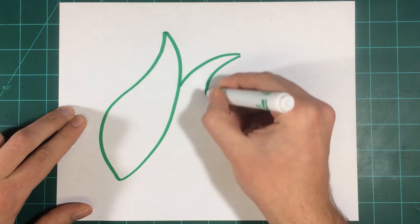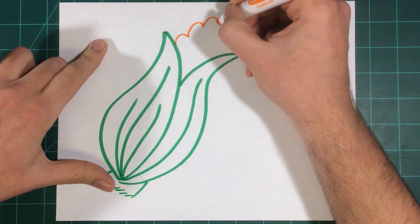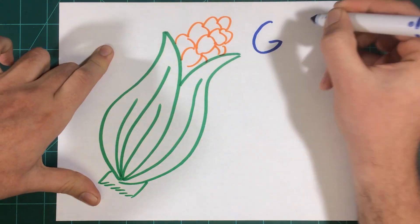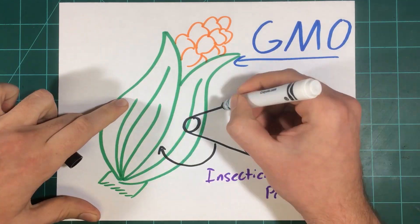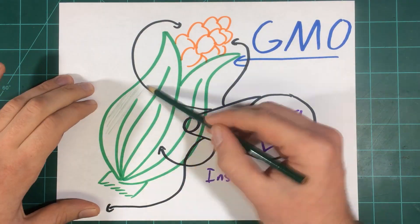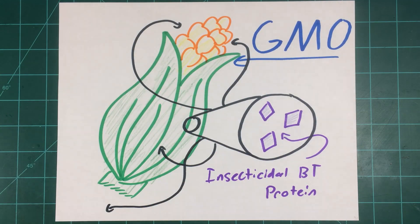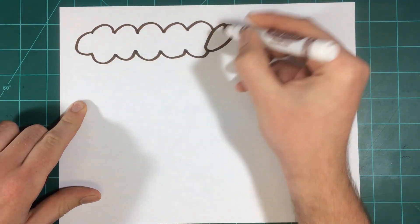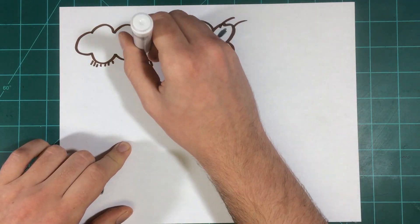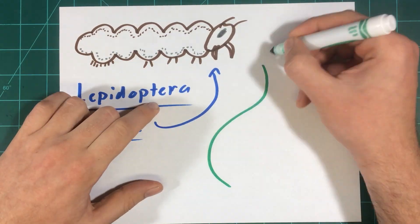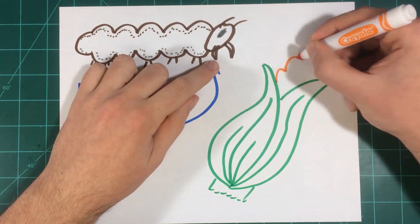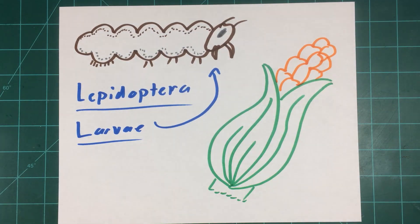BT corn is a genetically modified organism that expresses an insecticidal protein that is poisonous to very specific pests of corn. These pests are most often the caterpillar stages of various moth species, such as the European Corn Borer, the Corn Ear Worm, and the Fall Army Worm. All of these pests feed on the corn kernels and other tissues of the corn plant and have the potential to destroy entire crops of sweet corn.